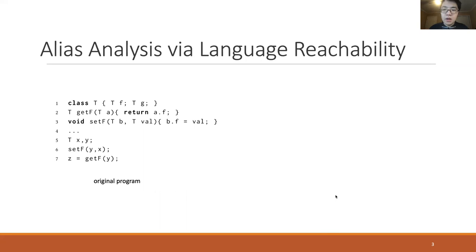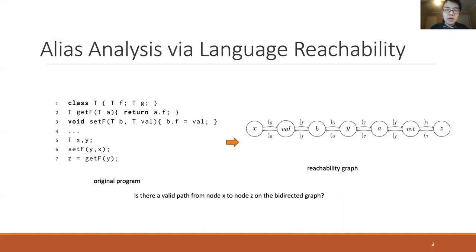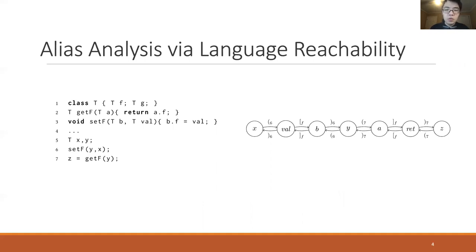In a formal language reachability problem, a graph is generated based on the original program. Nodes represent variables in the program and edges represent data flows between them. The question of whether variable x and variable z are aliases is transformed to deciding whether there exists a valid path between node x and node z.